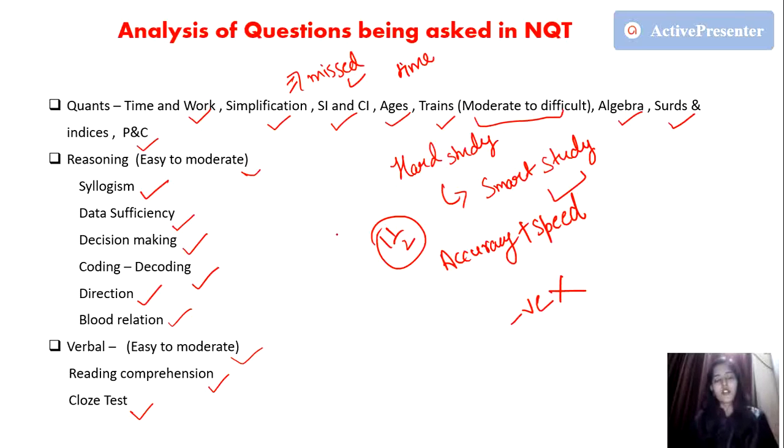Suppose you are not good in SI and CI. What you can do - instead of giving your time in SI and CI part, if you are getting any questions, just randomly mark any answer. Maybe by luck you got the right answer. Don't waste your time. If you waste your time, you are going to lag behind.